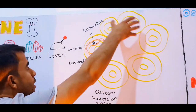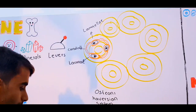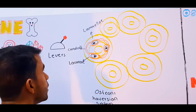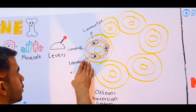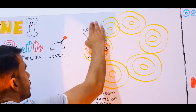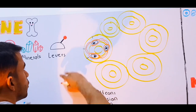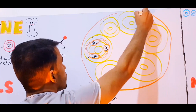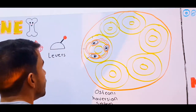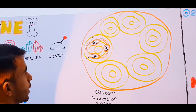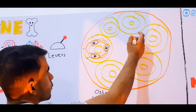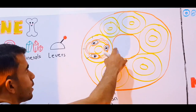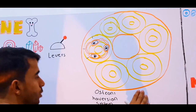All of these structural units are held in place via a circumferential lamella. From the outside you have the external circumferential lamella, and on the inside there is another layer called the internal circumferential lamella.